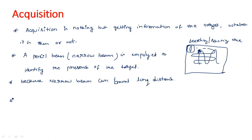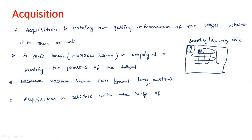Acquisition is nothing but getting the target information — whether the target is located in the vicinity of the radar system or not. That is the meaning of acquisition. This acquisition is possible with the help of different scanning patterns.